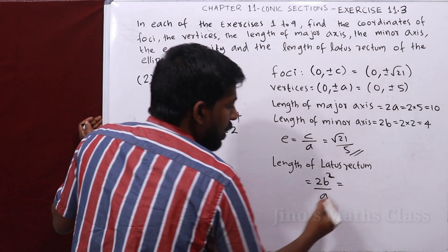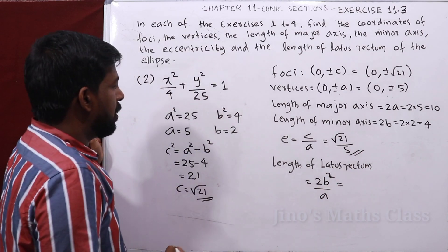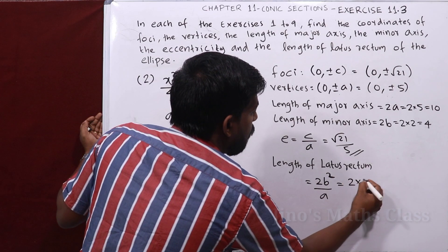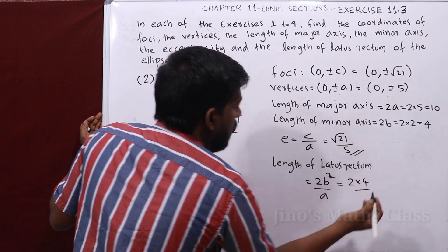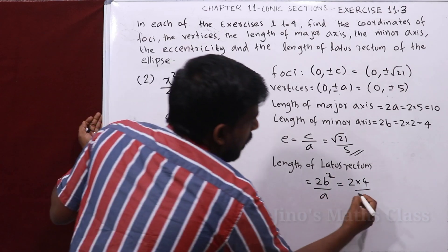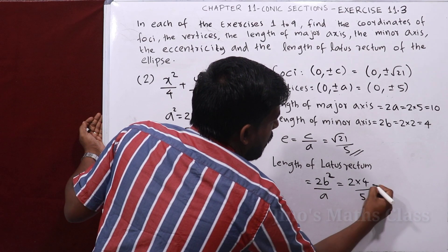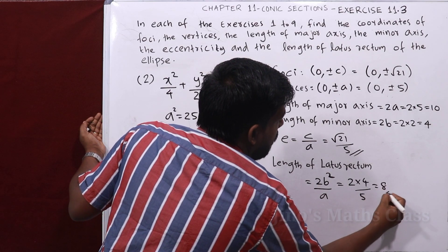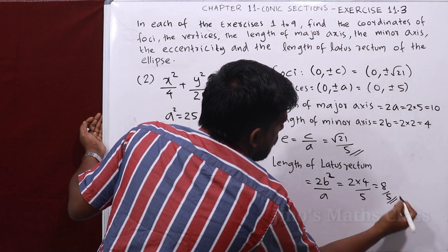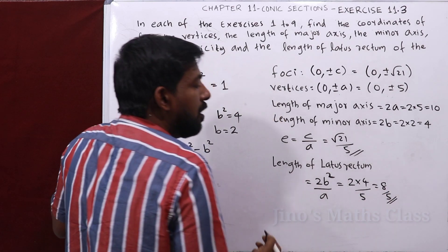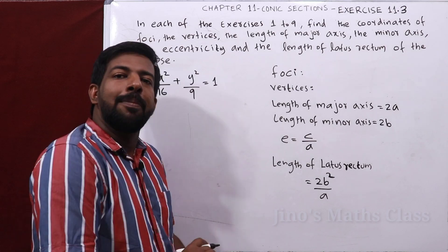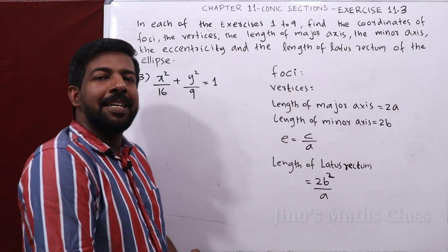The length of the latus rectum is 2b²/a = 2×4/5 = 8/5.